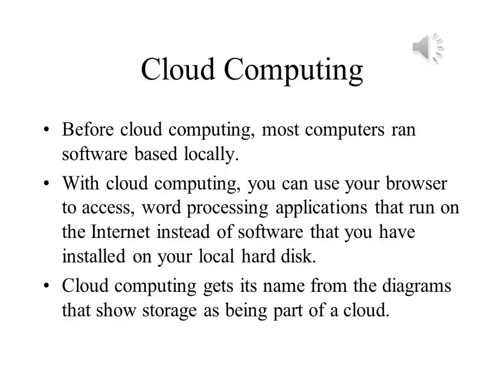When network architects diagram a network and wish to indicate storage devices that could be local or could be anywhere, they usually use a puffy cloud to indicate this kind of storage. This is now commonly used to indicate storage capabilities about which the user does not necessarily know much. These may be local or managed by some facility at a distance, and may be owned and operated by another company. Examples of cloud computing include storage services like Dropbox or software accessed over the internet such as Google Docs.